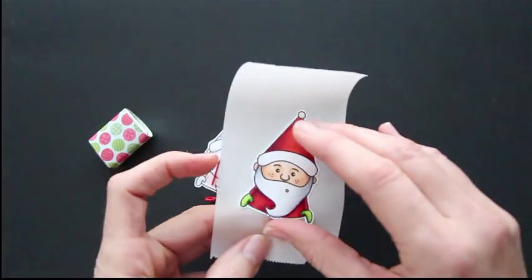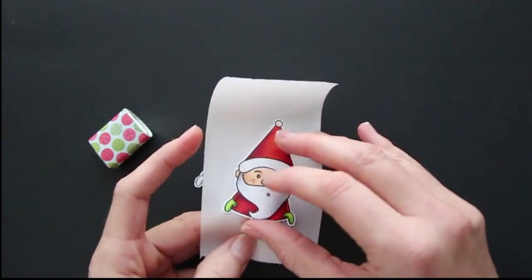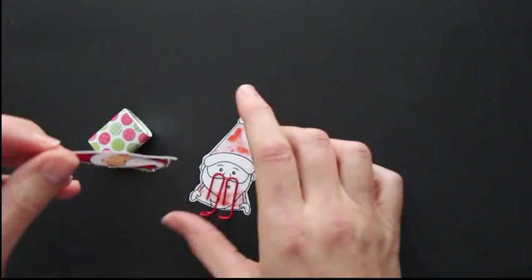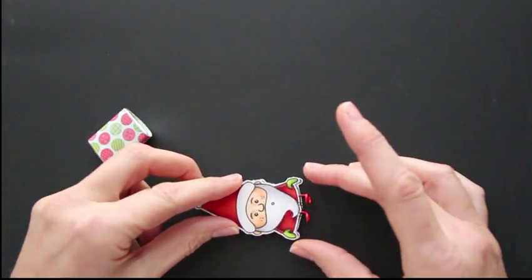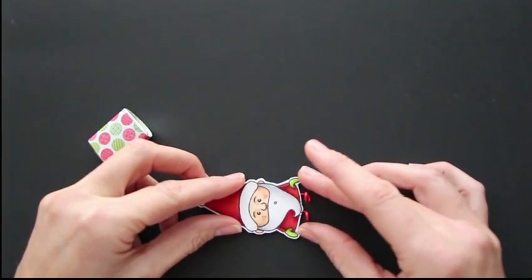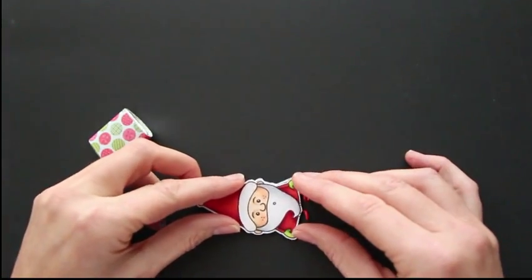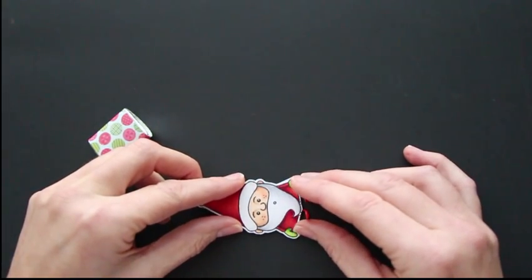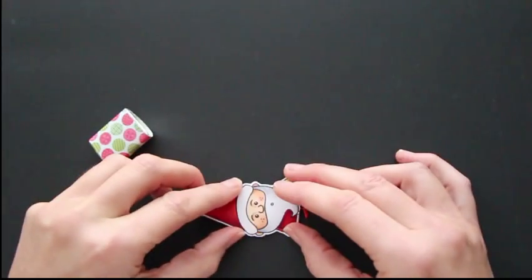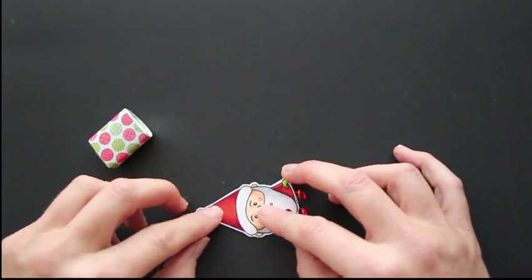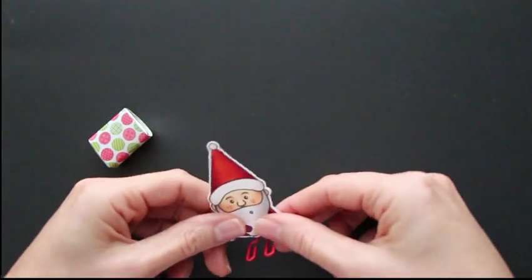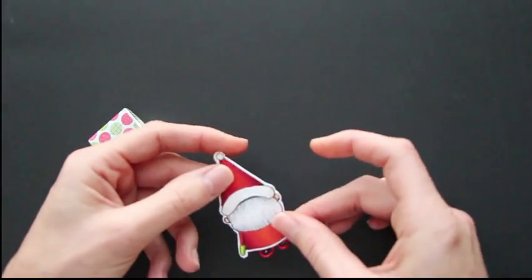And then I already ran my Santa front through my Xyron. You could just use any kind of adhesive, but this makes it nice because then you have adhesive all over the image. And then just adhere that. Line it up with the back. And now my Santa has a front and a back.